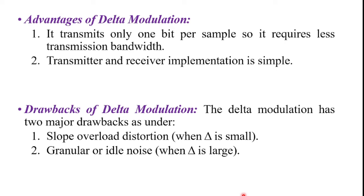Delta modulation transmits only one bit per sample. Therefore, the signaling rate and the transmission channel bandwidth is quite small for delta modulation compared to pulse code modulation. This is one of the key advantages of delta modulation and a major difference between delta modulation and pulse code modulation.